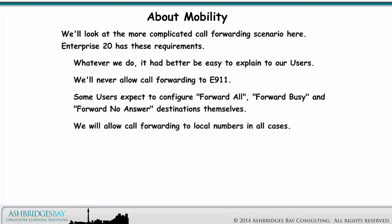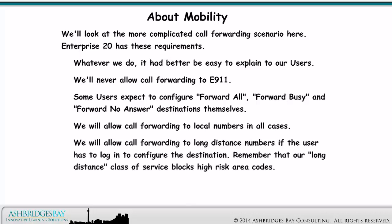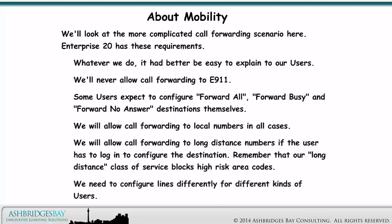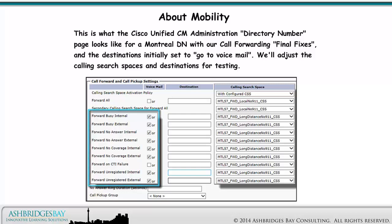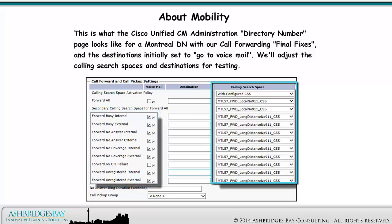We will allow call forwarding to local numbers in all cases. We will allow call forwarding to long distance numbers if the user has to log in to configure the destination. Remember that our long distance class of service blocks high-risk area codes. We need to configure lines differently for different kinds of users. This is what the Cisco Unified CM Administration Directory Number page looks like for a Montreal DN with our call forwarding final fixes and the destinations initially set to go to voicemail. We'll adjust the calling search spaces and destinations for testing.